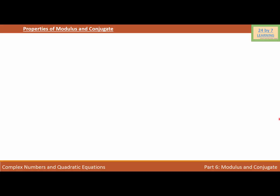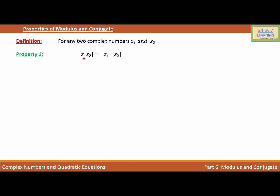Properties of modulus and conjugate. For any two complex numbers Z1 and Z2, Property 1: modulus of Z1 times Z2 is equal to modulus of Z1 times modulus of Z2.